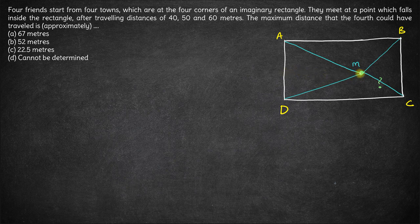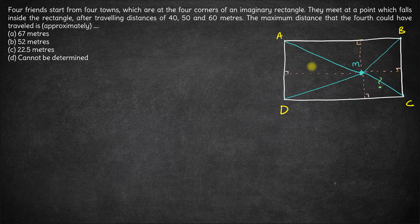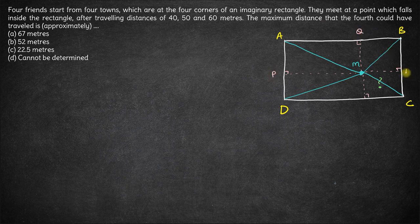Let's join this point with all four sides — that is, drop perpendiculars from the meeting point M to all four sides. We label these foot-of-perpendicular points as P, Q, R, S.